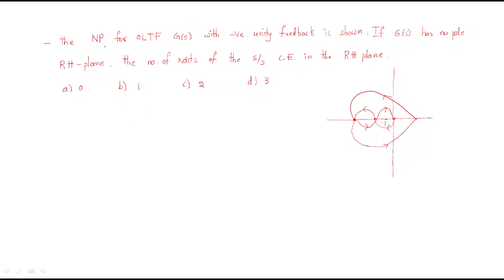Hello everyone. In this session we solve more problems on the Nyquist plot. The given problem states: the Nyquist plot for open-loop transfer function G(s) with negative unity feedback is shown in the figure. G(s) has no pole in the right-hand plane.